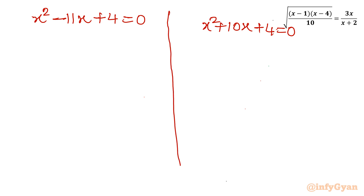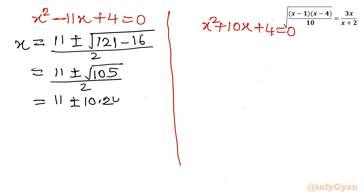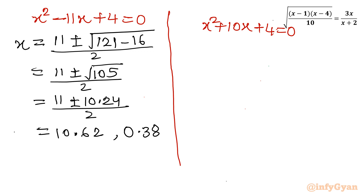Applying the quadratic formula to x squared minus 11x plus 4 equals 0: x equals (11 ± sqrt(121 minus 16)) over 2, which is (11 ± sqrt(105)) over 2. Since sqrt(105) is approximately 10.24, the two solutions are approximately (11 + 10.24) over 2 ≈ 10.62 and (11 minus 10.24) over 2 ≈ 0.38.